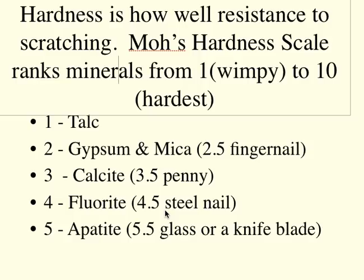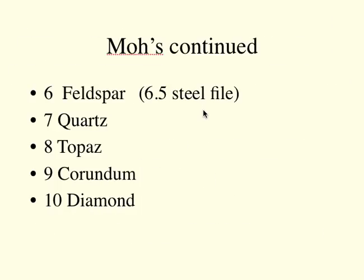If a steel nail can scratch it — we will do a lab using these tools — it's less than a four and a half, like fluorite. If a knife blade can scratch your mineral, or your mineral can scratch a knife blade, it's probably apatite. If a steel file is scratched by your mineral, it's less than a six and a half, like feldspar — a very common thing in glass. Above that we have quartz, corundum at nine, and diamond at ten. Only diamond scratches diamond — corundum is very, very hard at nine.